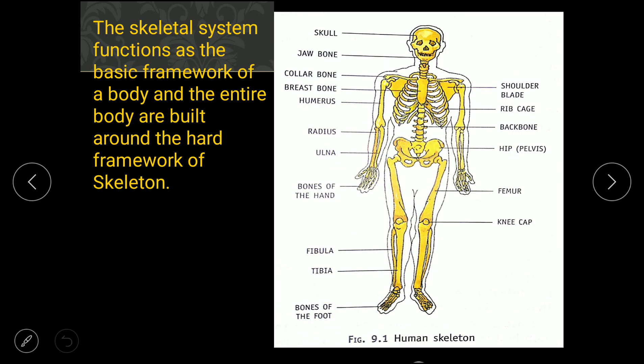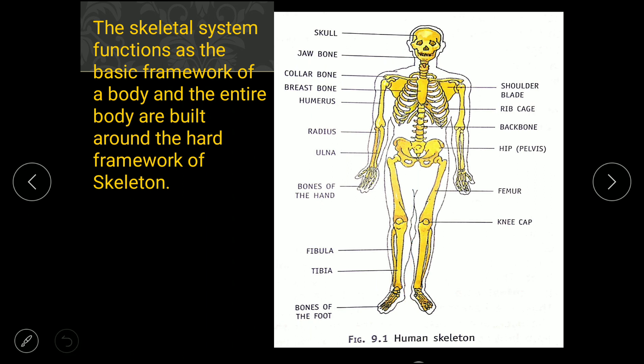The skeletal system gives a framework to the body. With the help of the skeleton we get a frame — how tall we are, how wide our shoulders are, how long our legs are. This framework gives shape and size to our body.